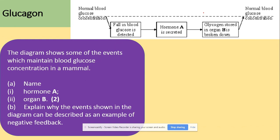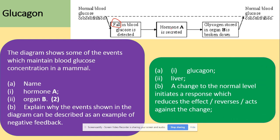Looking at a diagram showing events that maintain blood glucose concentration: hormone A, which causes a rise when glucose falls, is glucagon. The organ B where glycogen is stored and broken down is the liver. This shows negative feedback because once the change returns to normal, it reduces the effect — the secretion of hormone A — so that glucagon secretion stops.